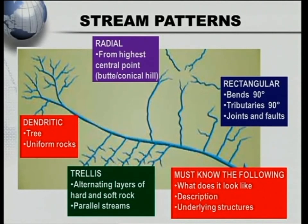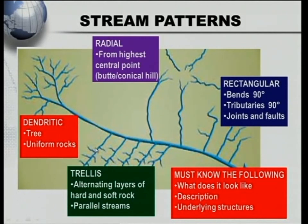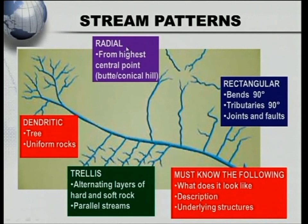Then the trellis pattern — we have alternating layers of hard and soft rocks. You'll see parallel streams, all roughly parallel to each other. The streams flow where we have soft rocks, and here we have hard rocks and soft rocks alternating. The streams are able to erode the soft rocks much quicker, and for that reason they flow where you have your soft rocks — that's why we have these parallel streams.